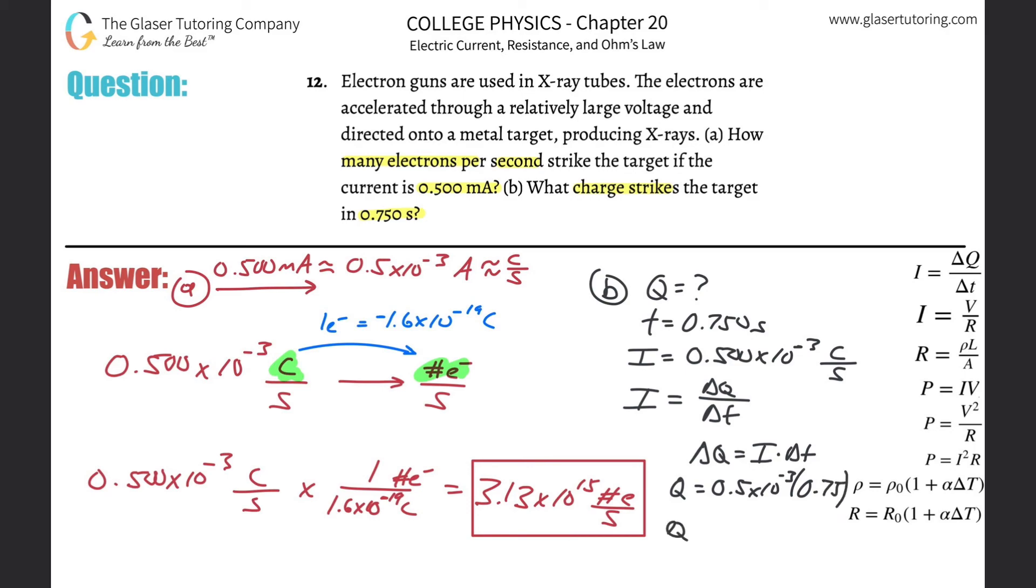And voila, we just plug it into the calculator. So 0.5 times 10 to the minus 3 multiplied by 0.75. And what do we get? We get 3.75 times 10 to the minus 4th coulombs. And there's probably another way you could have figured that out as well. There's many ways to approach it.